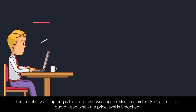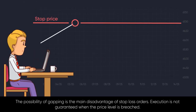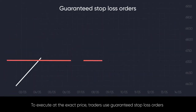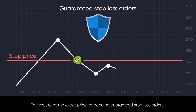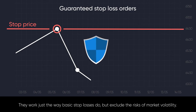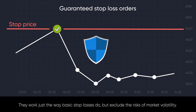The possibility of gapping is the main disadvantage of stop loss orders. Execution is not guaranteed when the price level gets breached. To execute at the exact price, traders use guaranteed stop loss orders. They work just the way basic stop losses do, but exclude the risks of market volatility.